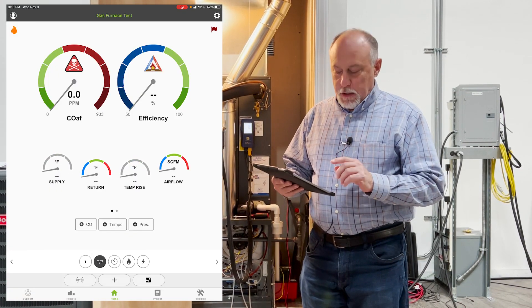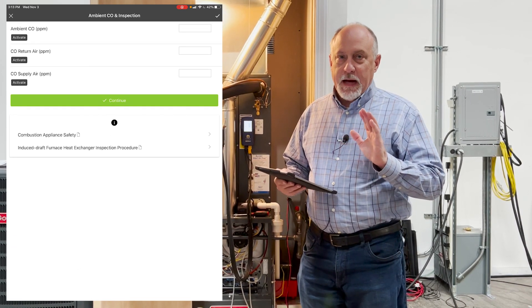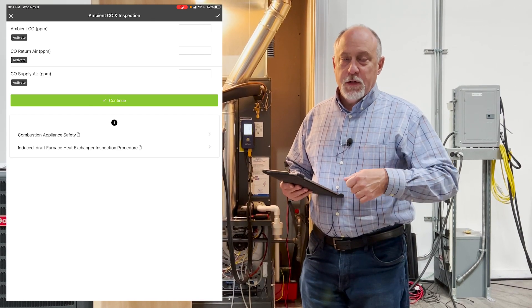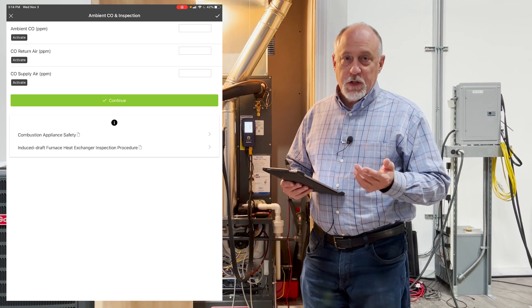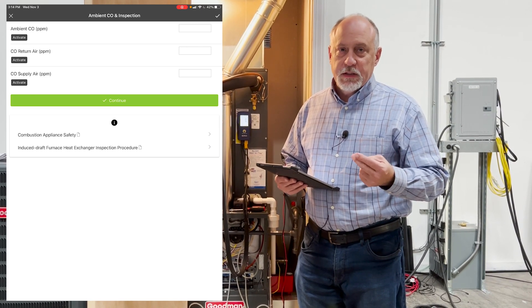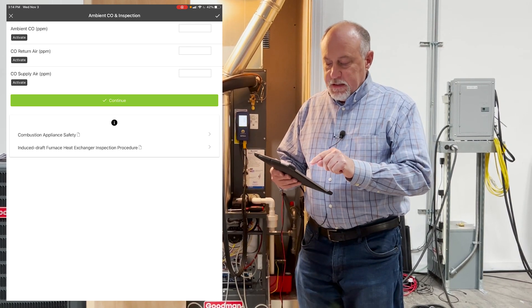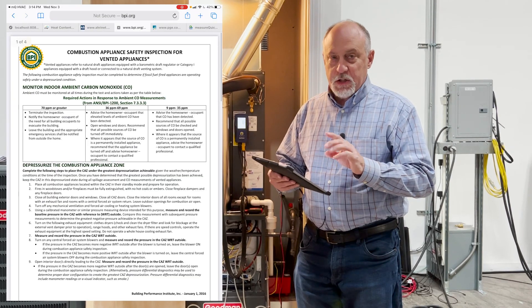If you pop into the temperature pressure sections of the app and you tap on the CO button, we get calls periodically about CO in a house. And if you experience CO in a house, what are the acceptable levels and what should you do if you measure CO in the stack or you measure CO in the house? What are the call to actions? So built into the bottom of that app, under that temperature pressure section, is the whole piece on combustion safety.